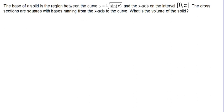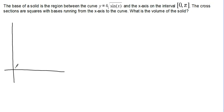The first example we're going to look at is a solid which has a base that looks like the graph of Y equals 4 times the square root of sine X, from X equals 0 to X equals pi. The graph of 4 times the square root of sine X looks something like that from 0 to pi, and that's the base of our solid.